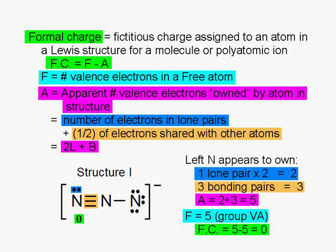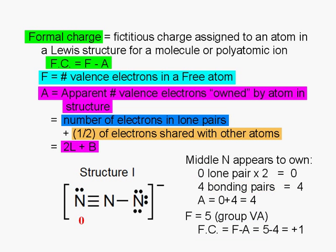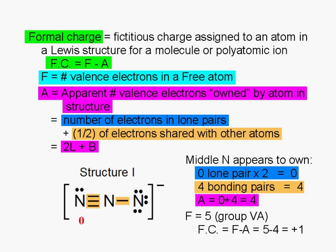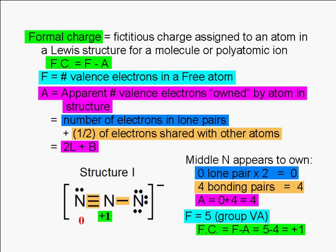Now let's determine the formal charge of the nitrogen atom in the middle. It has no lone pair, so L equals 0, and 2L also equals 0. It has four bonding pairs, a triple bond with the nitrogen on the left, and a single bond with the nitrogen on the right. So in this case, the nitrogen atom appears to own a total of four valence electrons. Once again, we subtract this from the number of valence electrons in the free atom. 5 minus 4 equals plus 1. Therefore, the formal charge of the middle nitrogen is plus 1. We could say that this atom appears to have lost one valence electron. If it were a free atom, it would have 5. But here, it appears to only have 4.